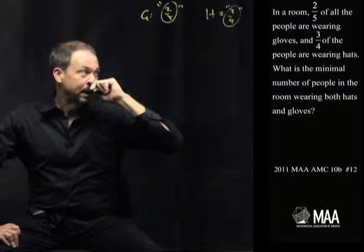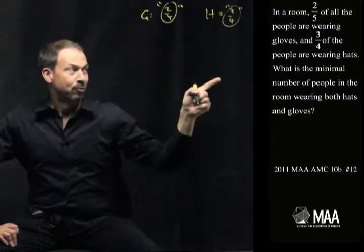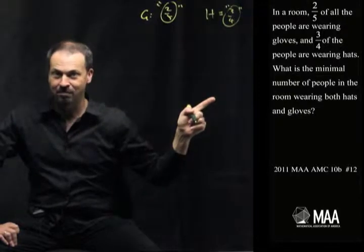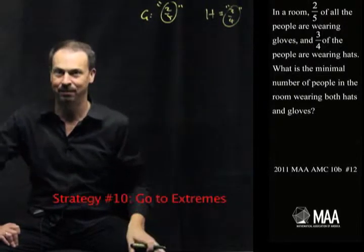Alright, now what am I doing here? It's about the minimal number of people in the room with some property. So that's suggesting strategy number ten to me, which is go to extremes. This time we want to go to the minimums.